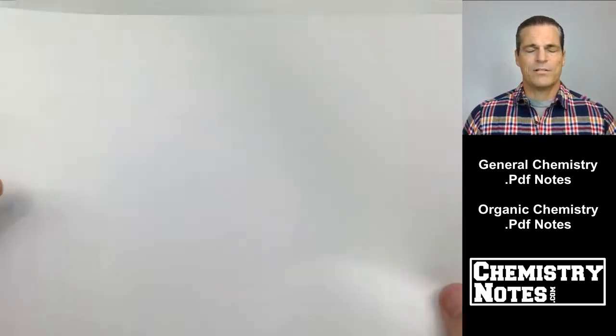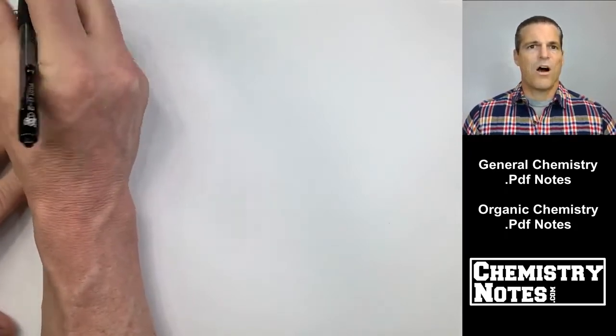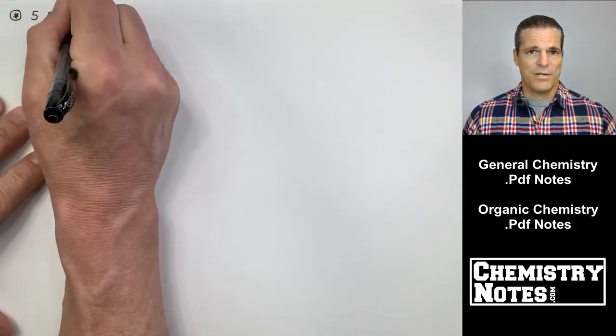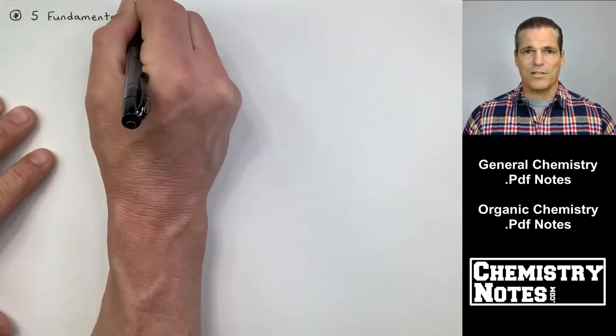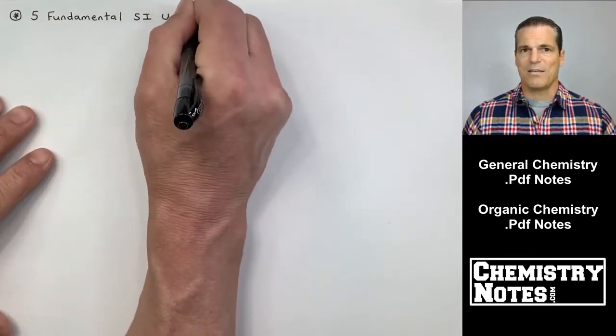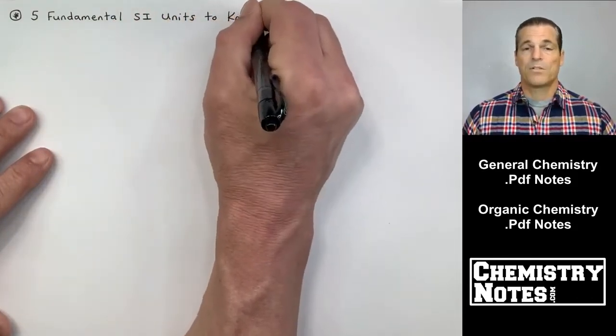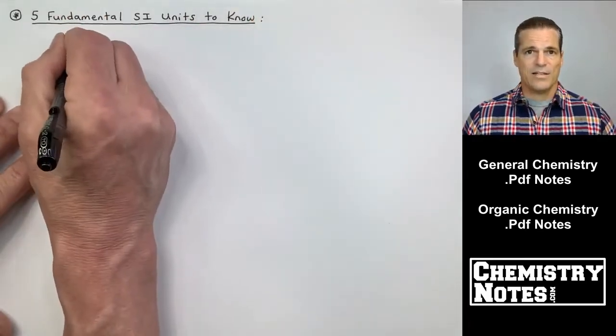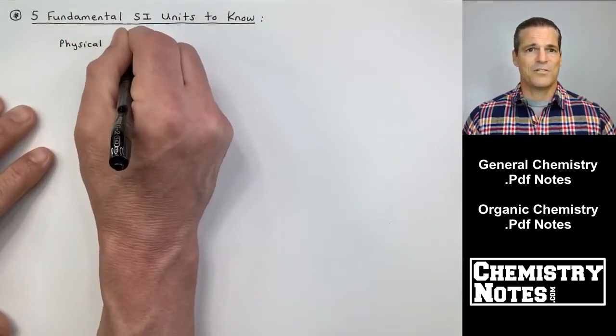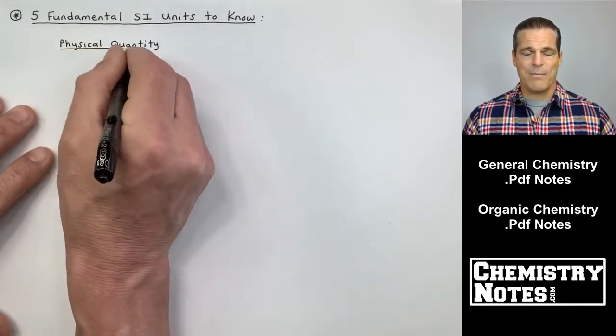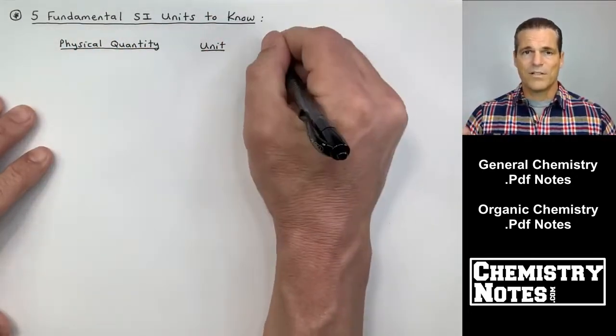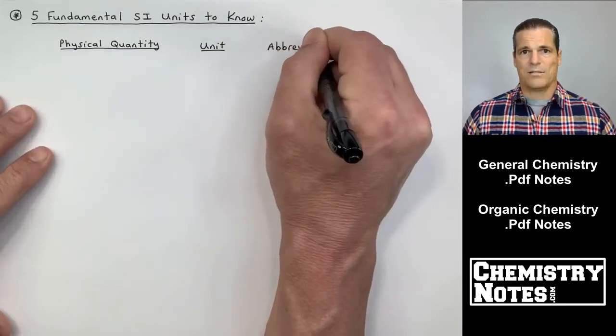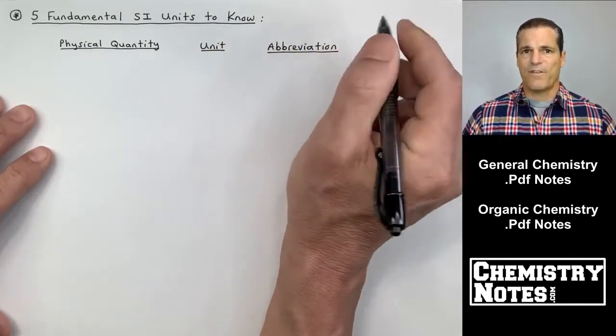Fundamental units, the SI fundamental units are often called SI base units. So if you ever see SI base units, it means the same thing as SI fundamental units. So what are these five fundamental SI units that I need to know? And these are units that are not derived from anybody else. These are original fundamental base units. So I'm going to make a list of five here.